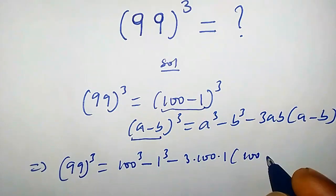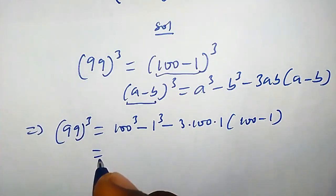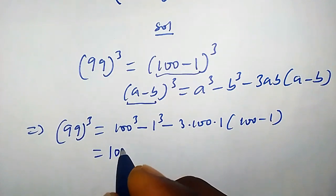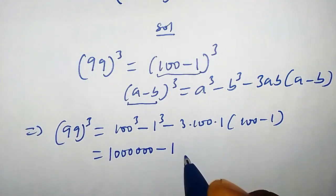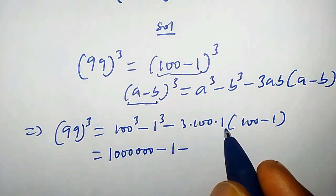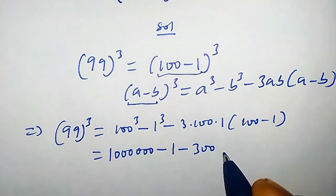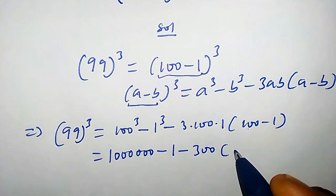So this equals 100³, that is 1,000,000, minus 1 raised to the power of 3, that is 1, minus 3 × 100 × 1, that is 300, times (100 - 1), that is 99.